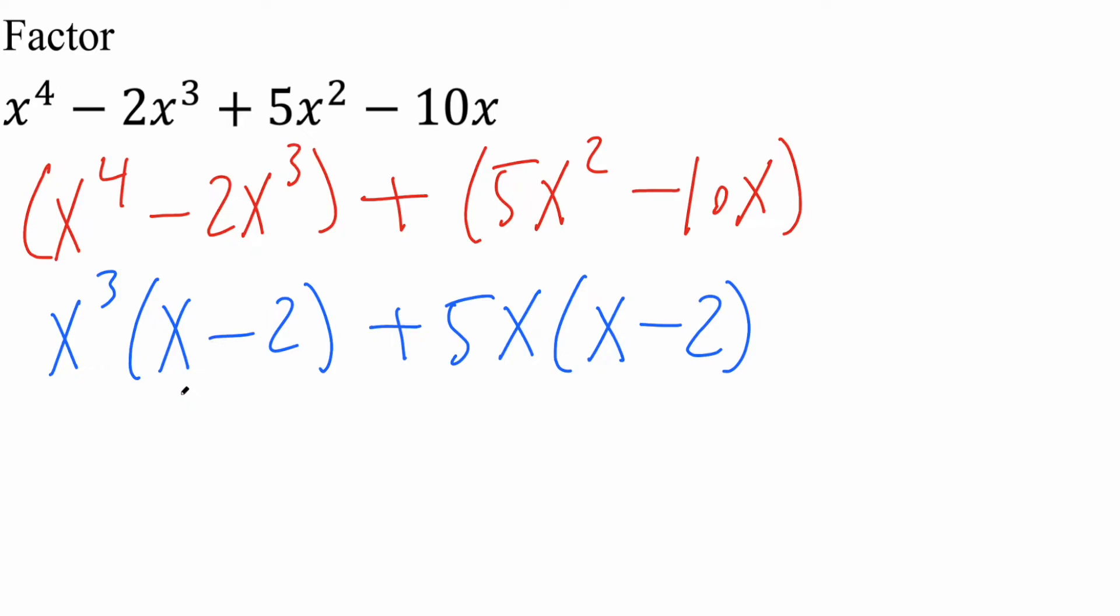At this point we see what's identical. We have an x minus 2, we have an x minus 2. Because it's identical we get to copy it. So we'll have x minus 2, close parentheses, parentheses, x cubed plus 5x.